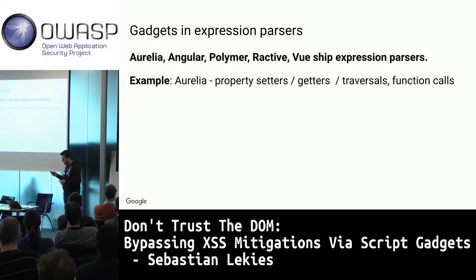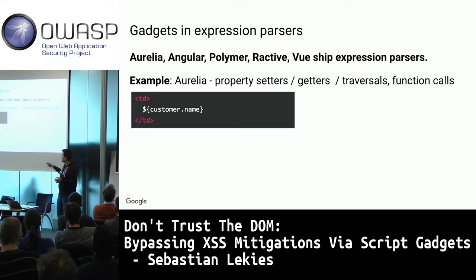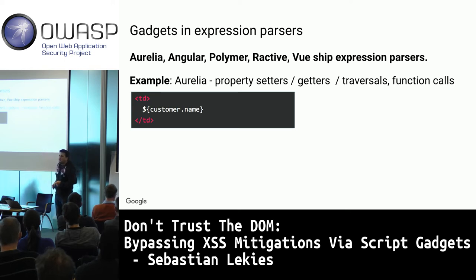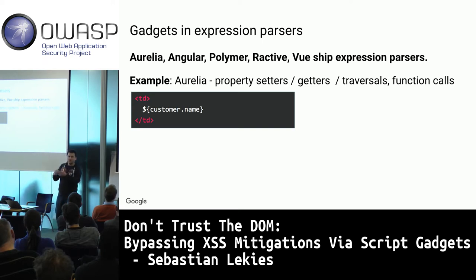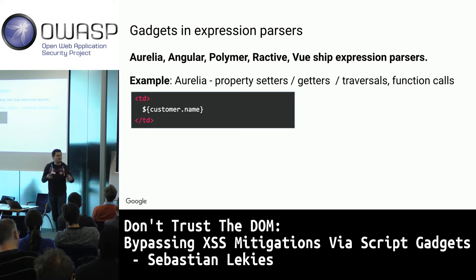Let me explain with the Aurelia expression language. You use expressions with ${...} syntax — for example, ${customer.name}. This is not JavaScript; it's interpreted by the framework. Aurelia looks up the customer object in its scope and prints the name, with two-way data binding so updates anywhere in the app are automatically reflected in the HTML.